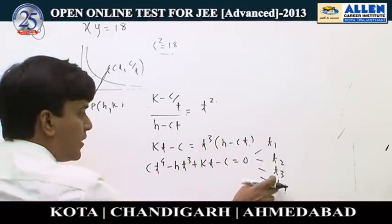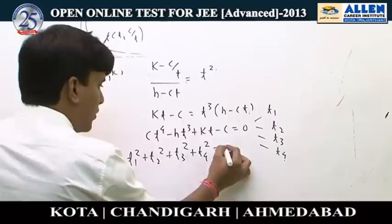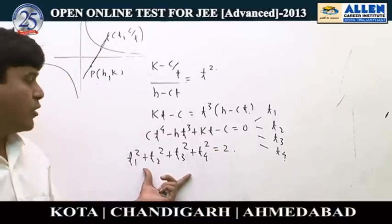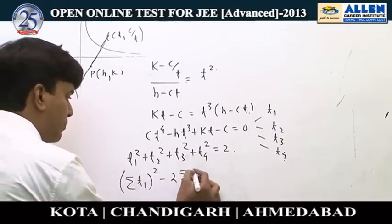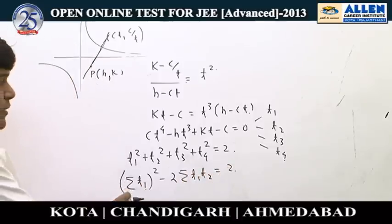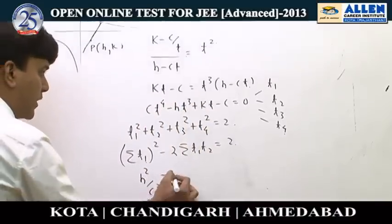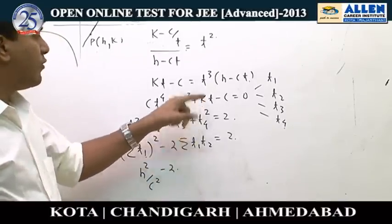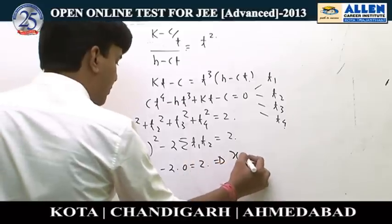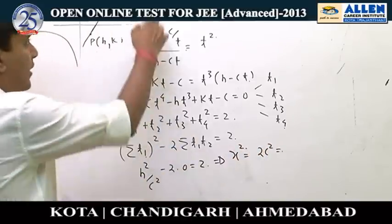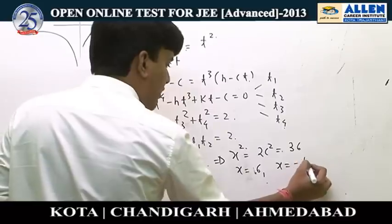Using the identity (Σt₁)² minus 2(Σt₁t₂) equals Σt₁², and from Vieta's formulas Σt₁ equals h/c and Σt₁t₂ equals 0 (coefficient of t² is absent), we get h²/c² minus 0 equals 2, so x² equals 2c². With c² equals 18, x² equals 36, giving lines x equals 6 and x equals minus 6. The distance between them is 12.